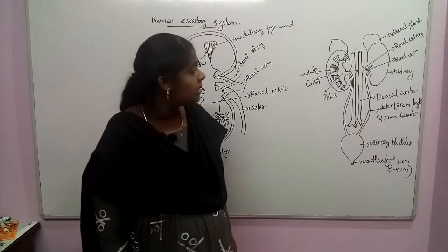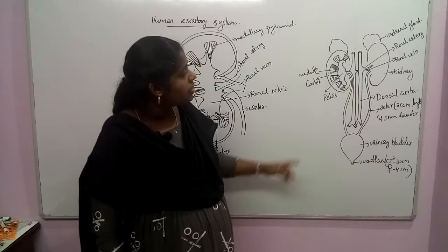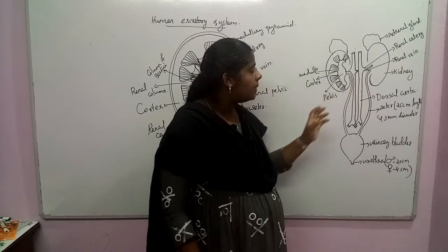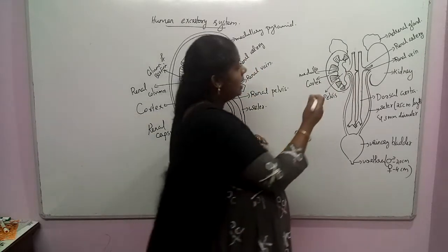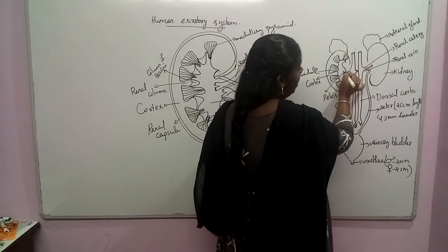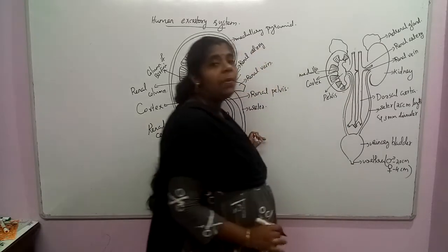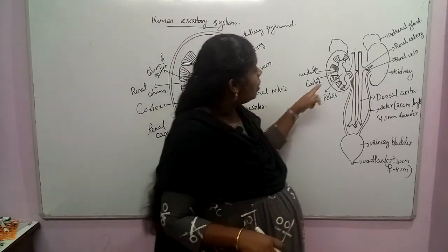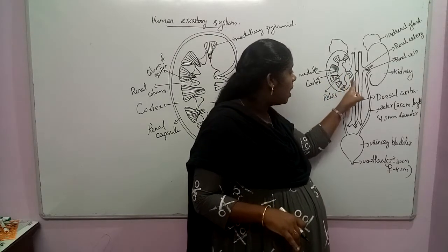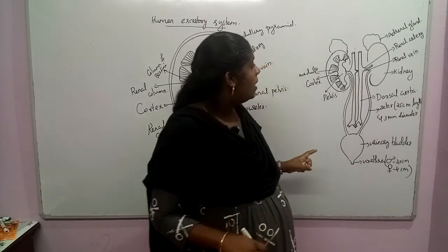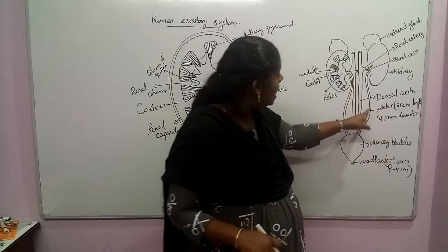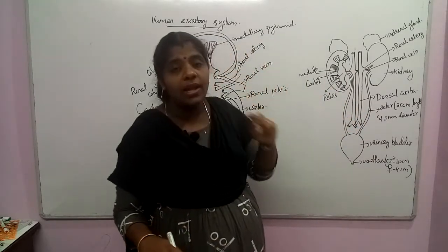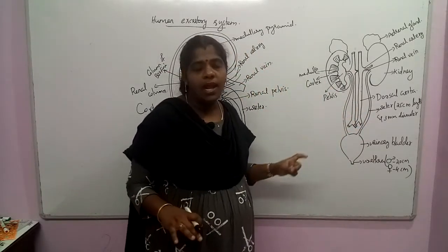We can see the inner concave structure of each kidney, which is called the hilum. Through the hilum, the ureters pass out. The dorsal aorta as well as the inferior vena cava run into the hilum region.